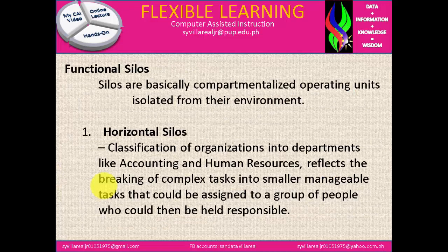Functional silos. Silos are basically compartmentalized operating units isolated from their environment. We have two functional silos: number one is horizontal and number two is vertical. Horizontal silos are the classification of an organization into departments like accounting and human resources, reflecting the breaking of complex tasks into smaller manageable tasks that could be assigned to a group of people who could then be held responsible. This is a small application or a small system — that is what you call horizontal. One example of that is a calculator application.